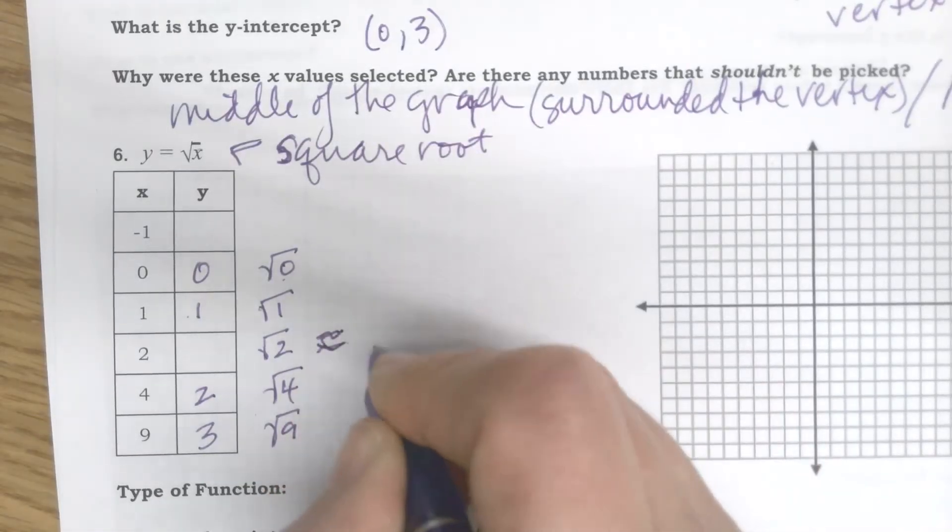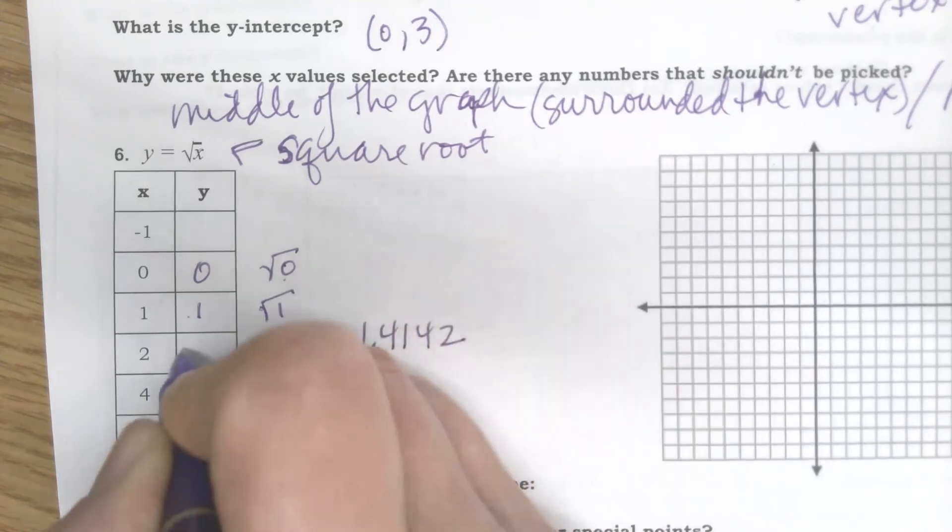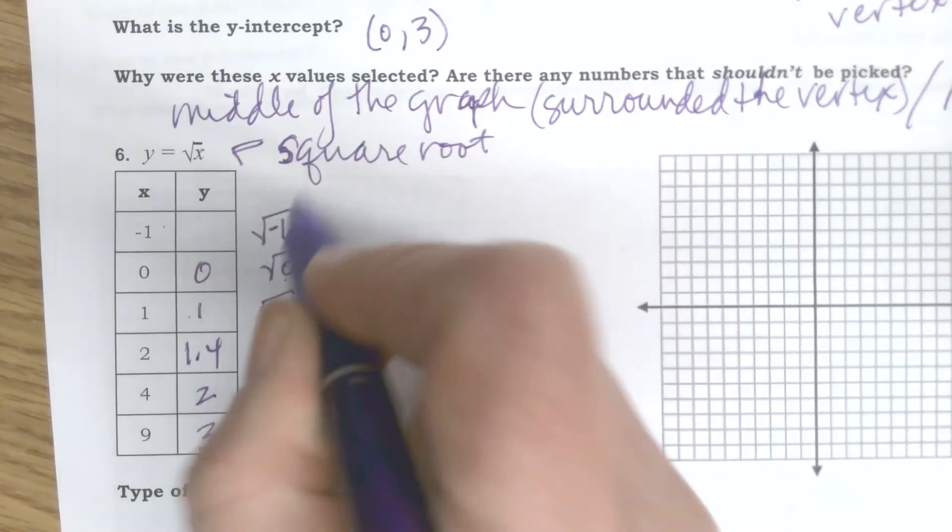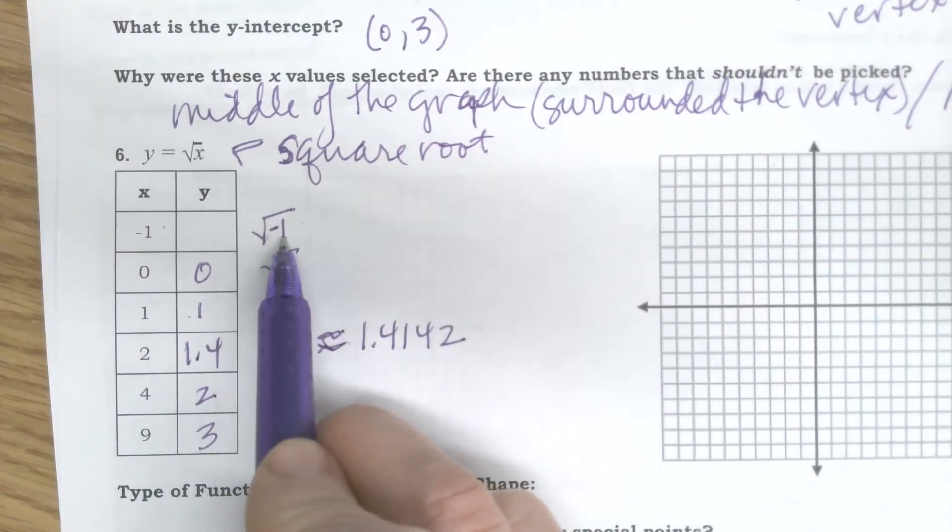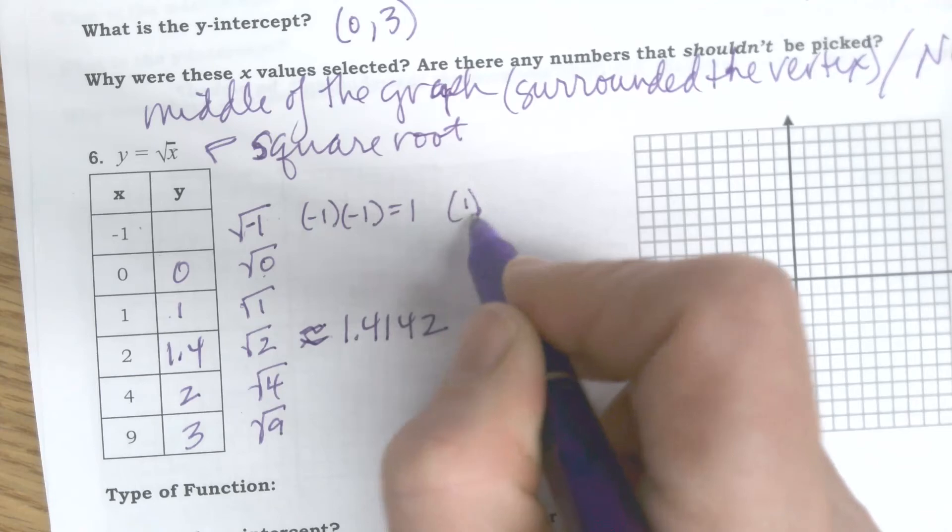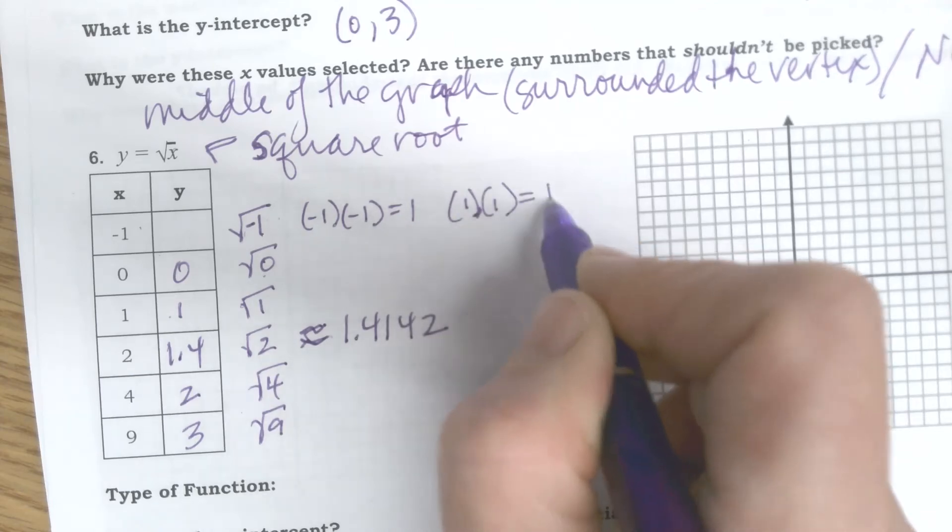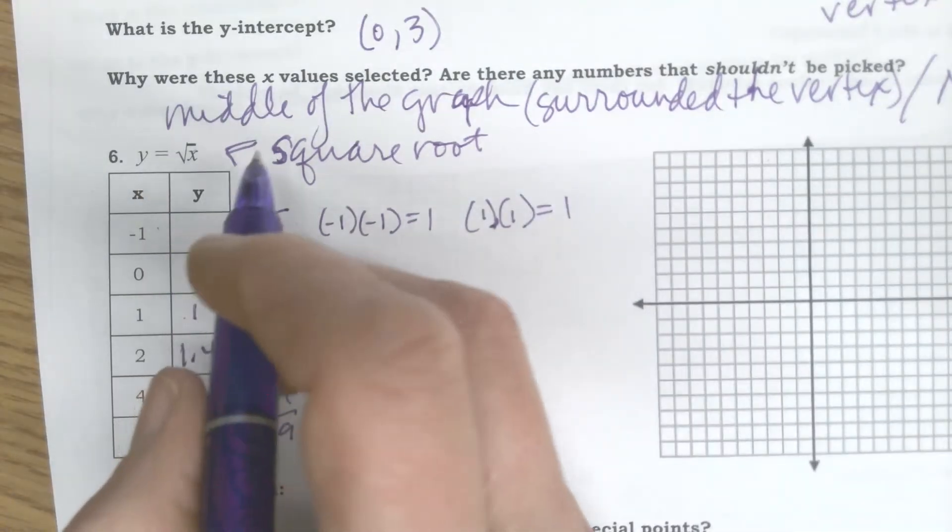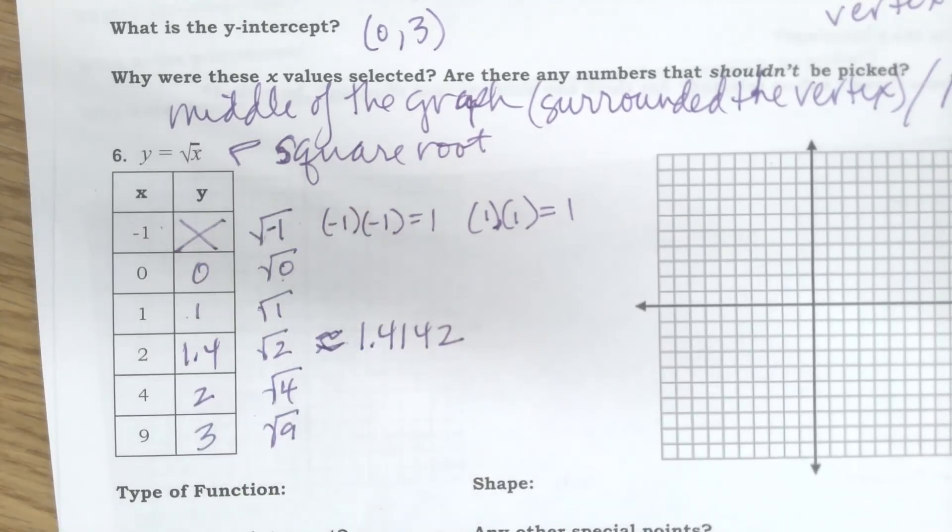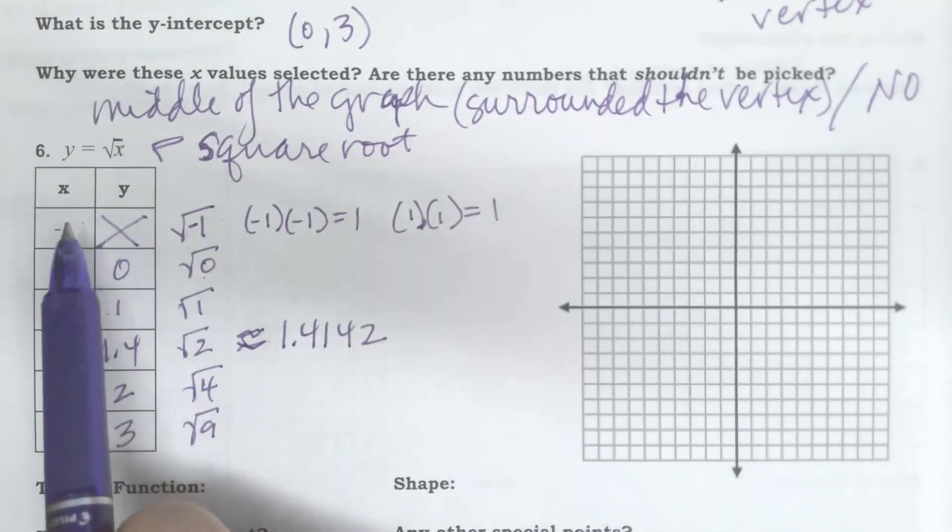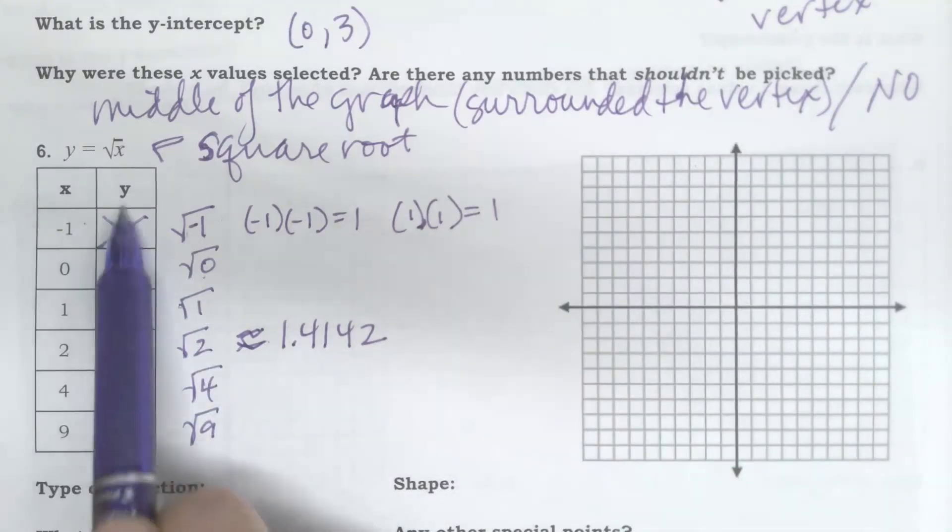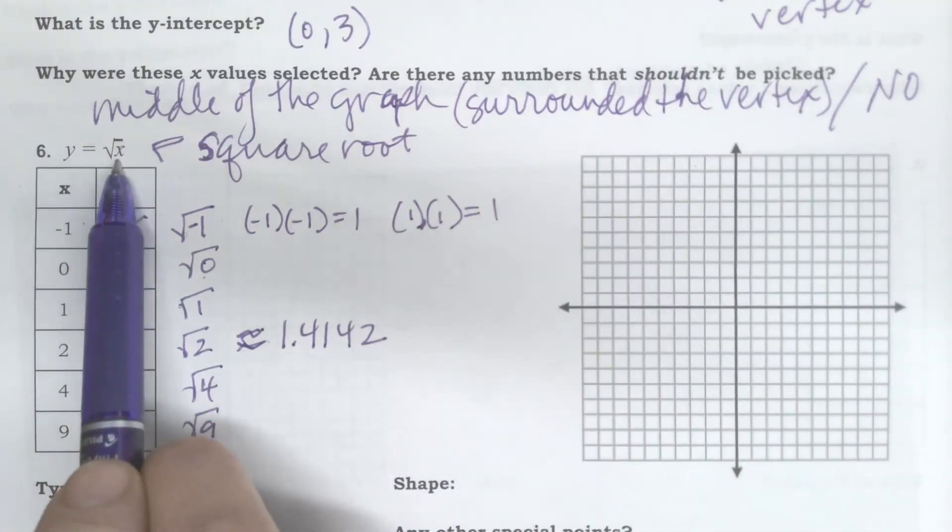Last one here. What number times itself equals negative 1? Well, negative 1 times negative 1 is positive 1. Positive 1 times positive 1 is positive 1. I don't have a value here. I can't get that. There is no value times itself that equals negative 1. So I have a restricted one. Remember what I was asking, are there any numbers you shouldn't pick? This is a situation where I shouldn't pick negative 1 because I can't find the square root of negative 1.